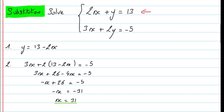Once we find the value of x, we can substitute this value into the first expression of y: y equals 13 minus 2x. In that case, x is 31, so y equals 13 minus 2 times 31.